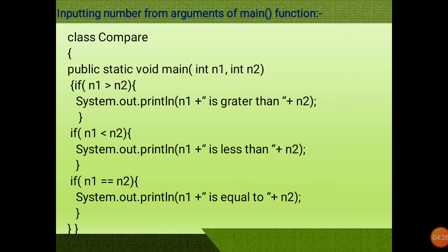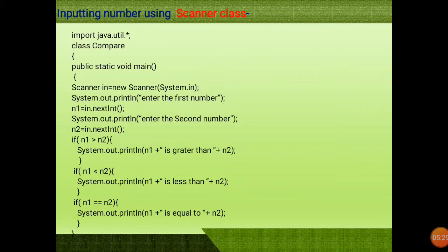In the previous program we fixed the values of n1 and n2. Now in this version we enter the values of n1 and n2 using main function arguments — we send the value of n1 and n2 as arguments to the main function. The class 'compare' is slightly modified: within the main function I am passing arguments int n1 and n2, and the rest of the program is the same. When we run this program, the main function asks for values for n1 and n2, and based on your entered values it displays whether n1 is greater than, less than, or equal to n2.